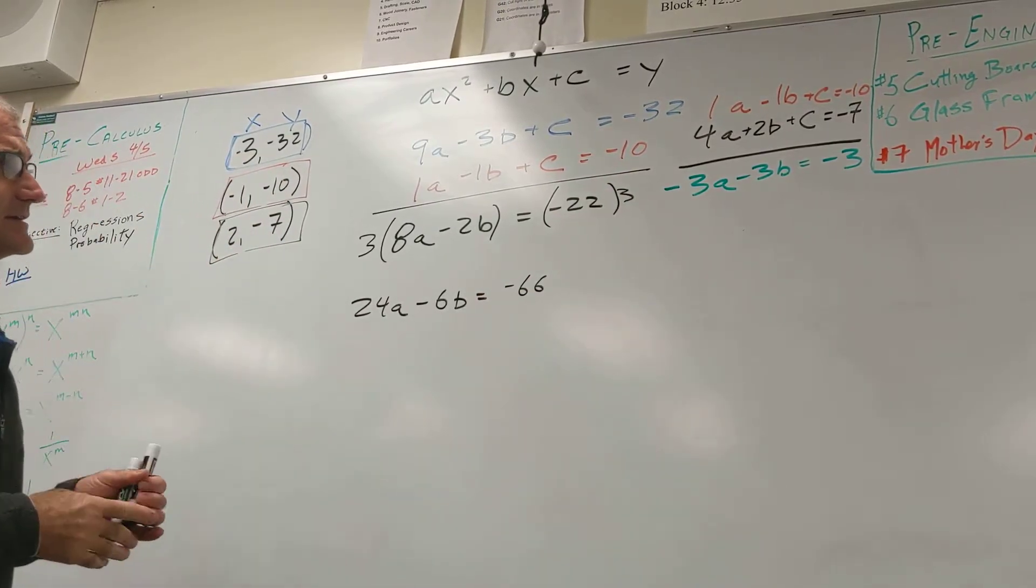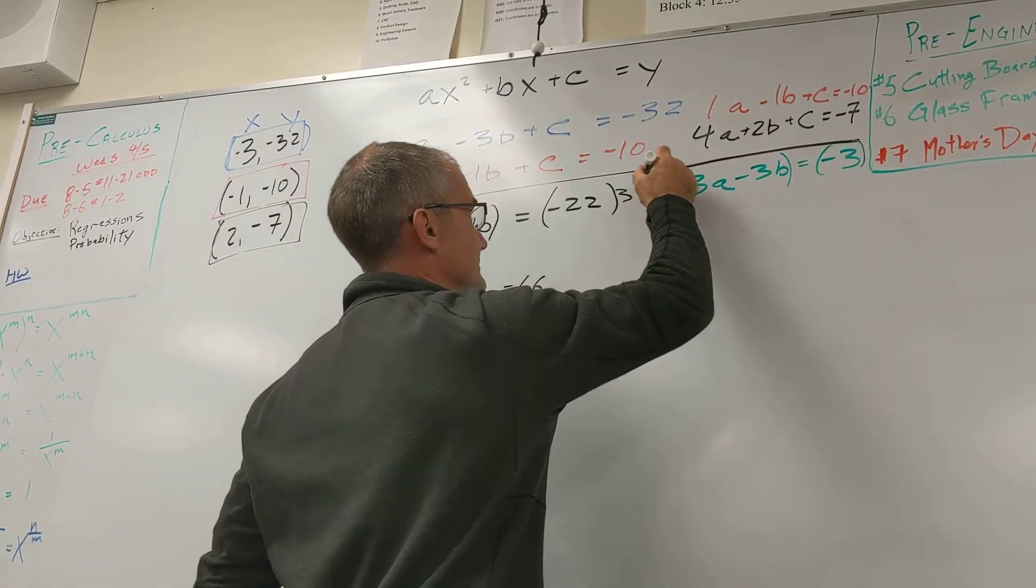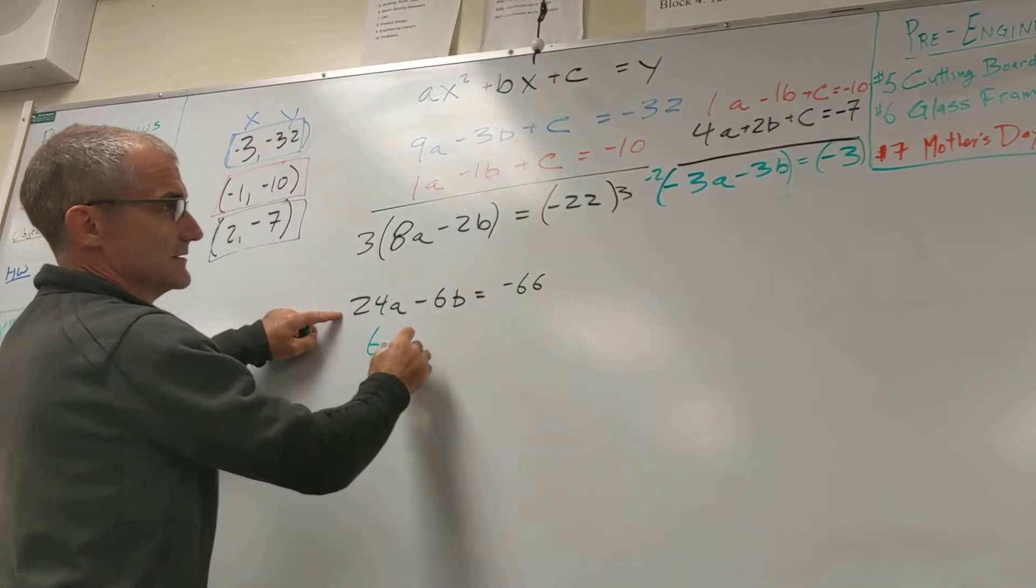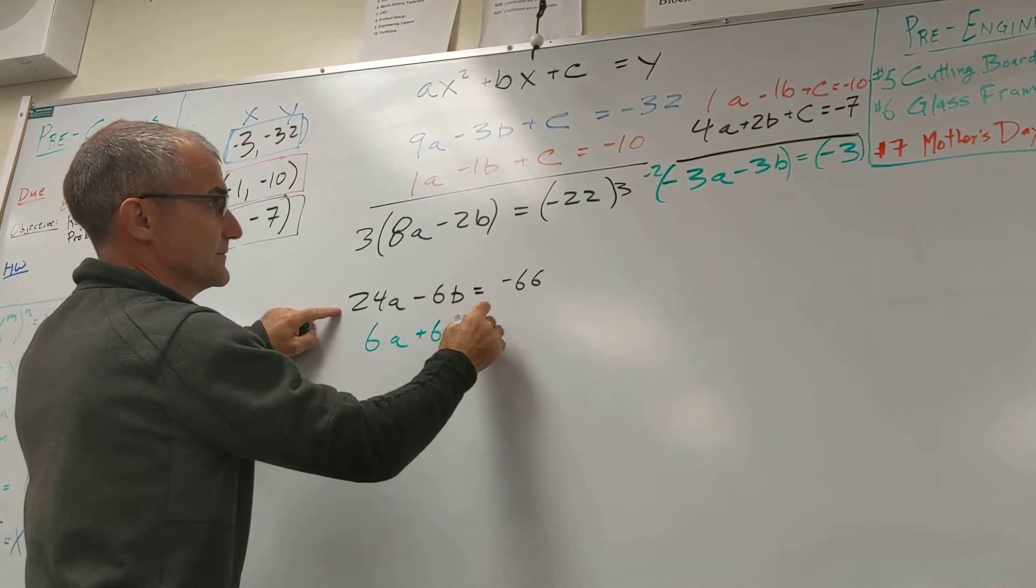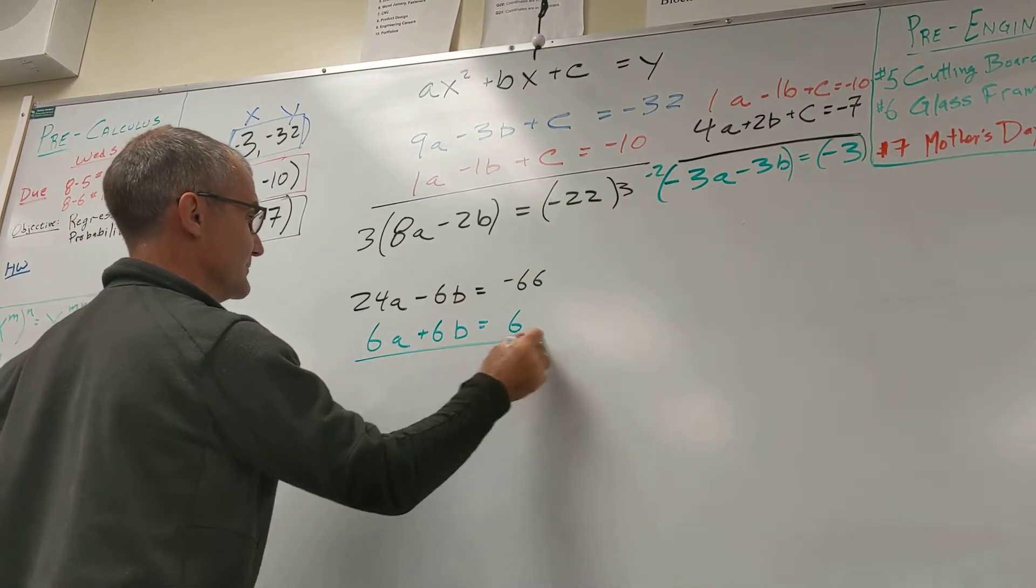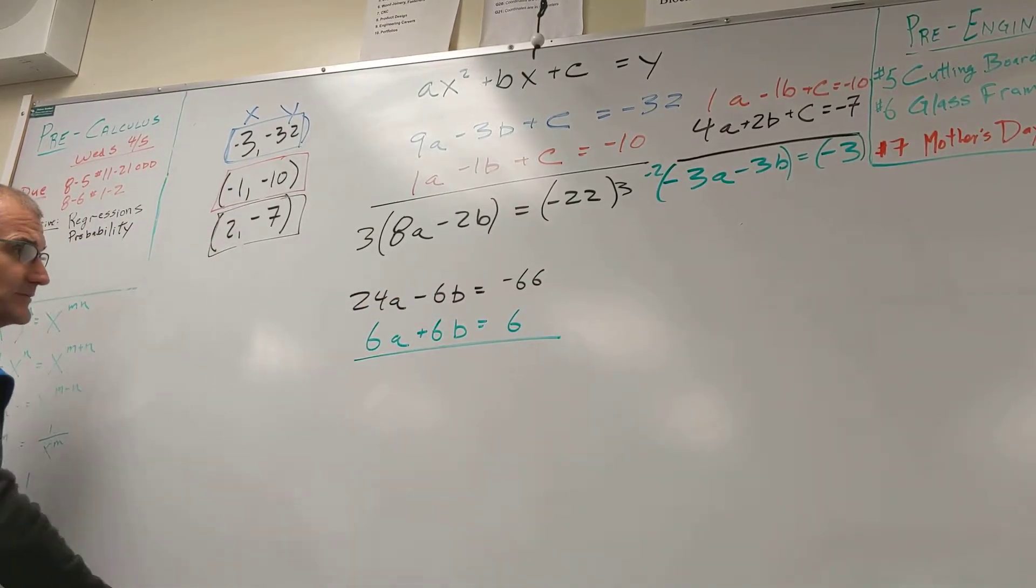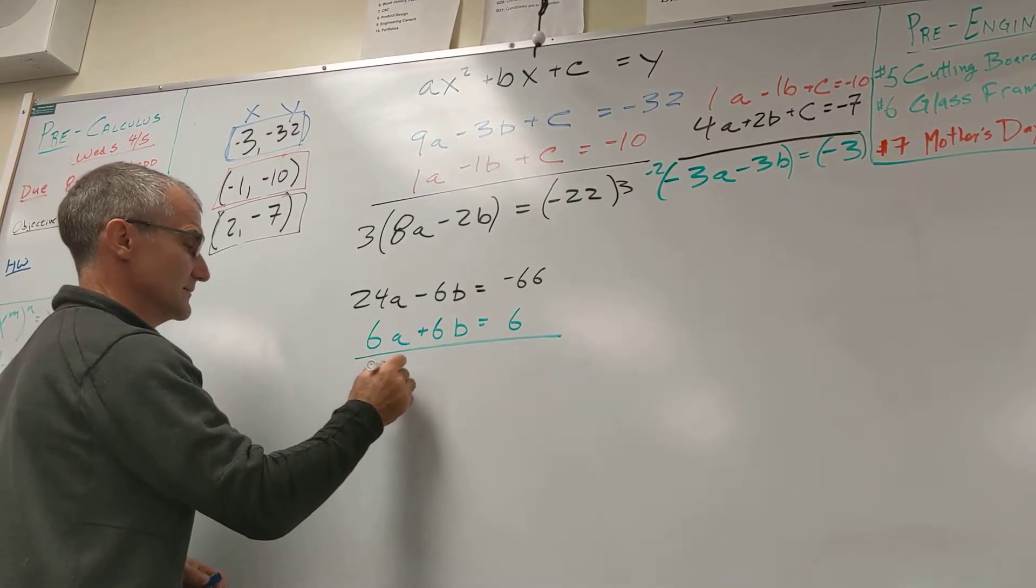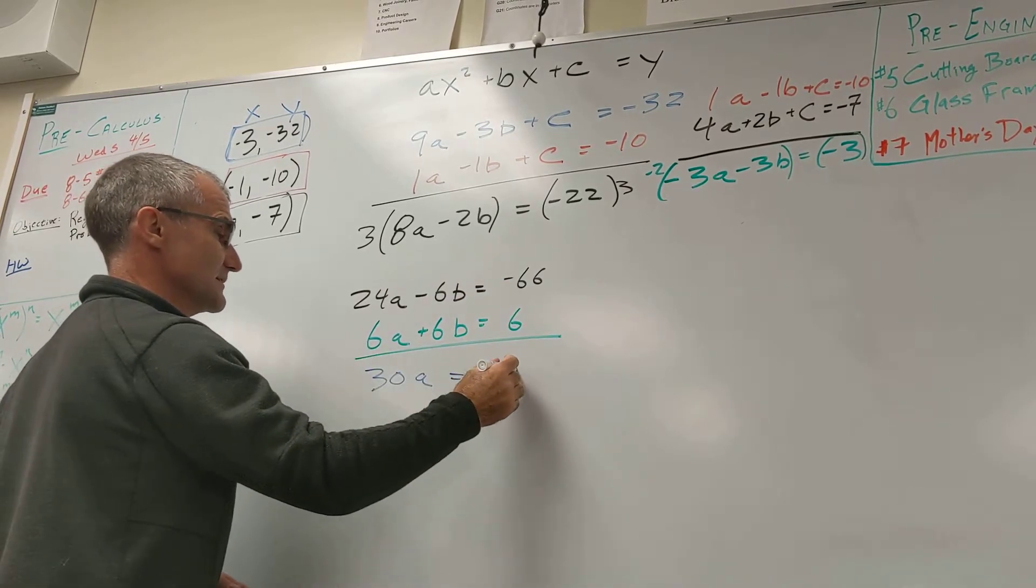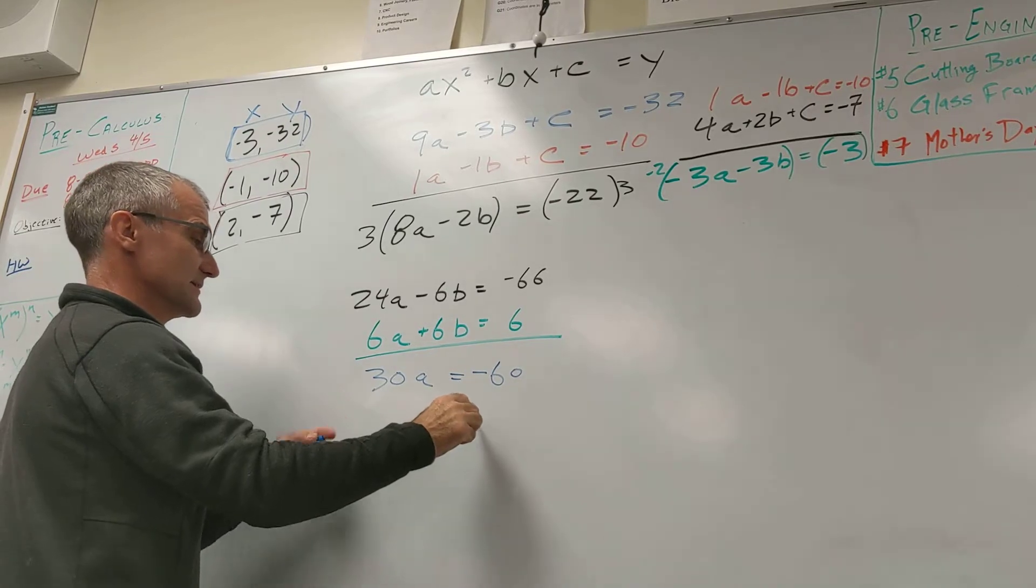Then on that green equation, I'm going to multiply it by a negative 2 on both sides. To get negative 6a plus 6b equals 6. Now I'm going to combine those two equations right there. The b's are going to drop out. Combine those two to get 30a. Those b's have dropped out. Negative 60. Divide both sides by 30. To get a is equal to negative 2.